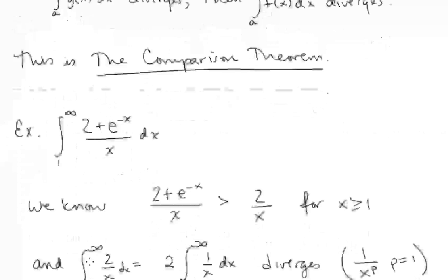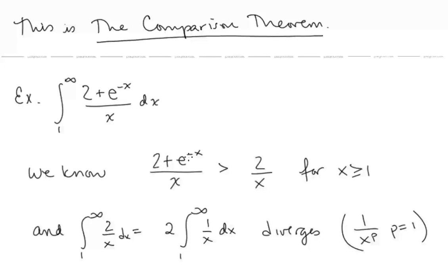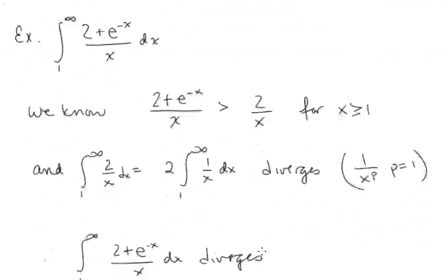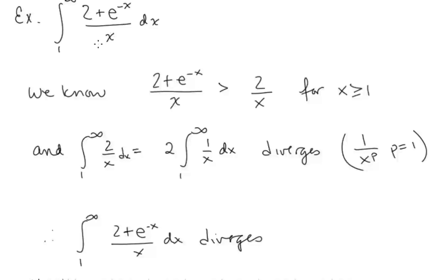Since e^(-x) is always positive, we have 2 + e^(-x) > 2. Because the x values are positive, dividing preserves the inequality, so (2 + e^(-x))/x > 2/x for all x ≥ 1. We know the integral of 2/x from 1 to infinity diverges. Therefore, our given integral also diverges.